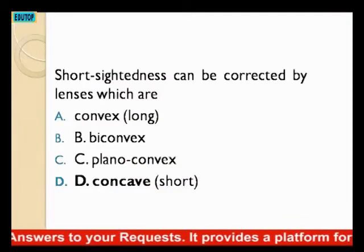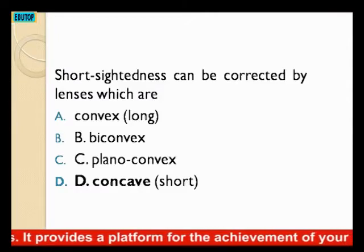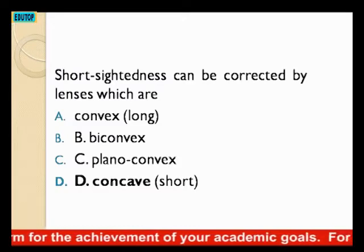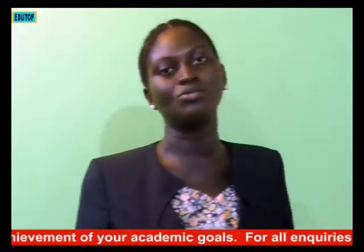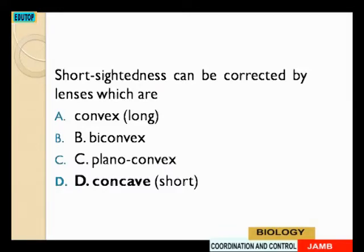The next question: short-sightedness can be corrected by lenses which are A, convex; B, biconvex; C, plano-convex; D, concave. This question is easy — every other option is convex except one, which is concave. For short-sightedness, it is a concave lens that will correct it, while for long-sightedness it is a convex lens. So our answer is D, concave lens corrects short-sightedness.